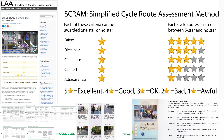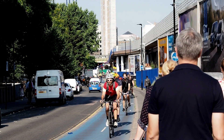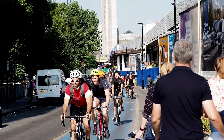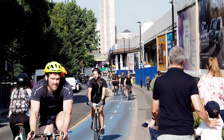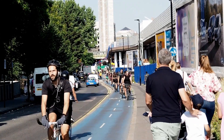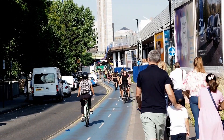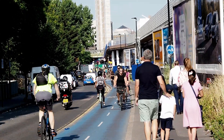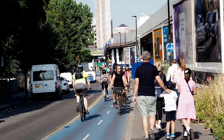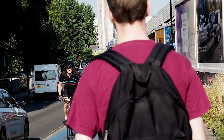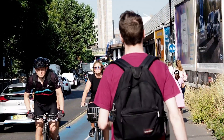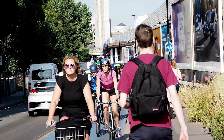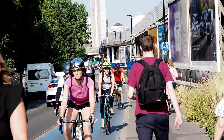With regard to capacity, data is scarce but indicates that a 3.5-meter-wide cycleway will carry between four and eight times as many people as a 3.5-meter road in use by cars.